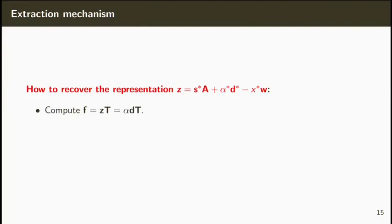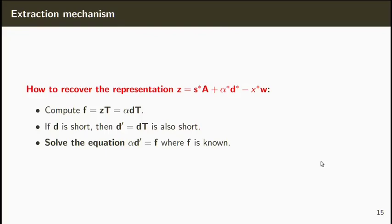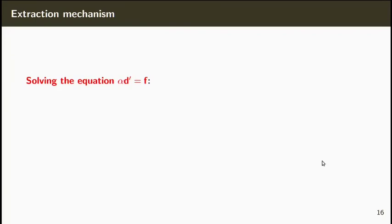So, how can we recover all the components of the vector Z? Well, if we compute F, which is Z times the trapdoor T, then, since A' times T is equal to 0, this will be equal to alpha D times T. If D is short, then the product D times T is also short because T is a low norm matrix. So, we have to solve the equation alpha times D' where D' is the product D times T equal to F where only F is known.